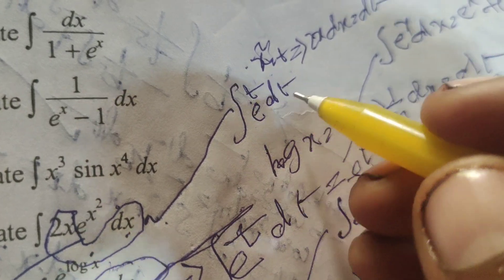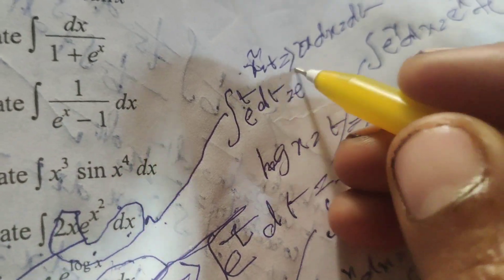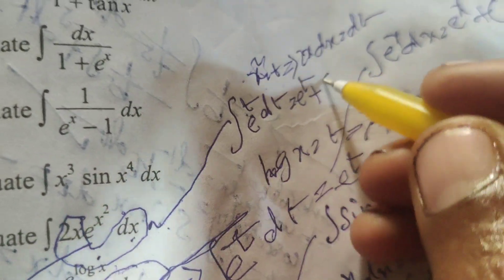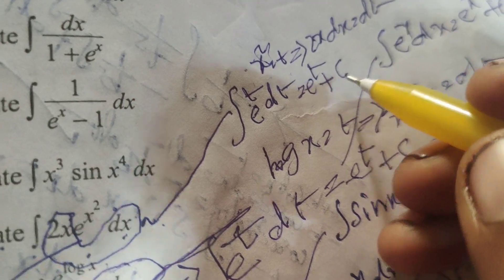Now, integrate e^t. We will get e^t plus c. After integrating, add the constant plus c.